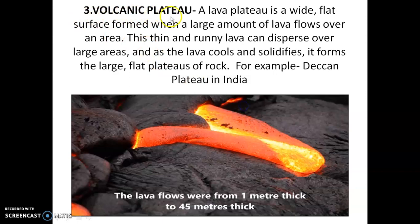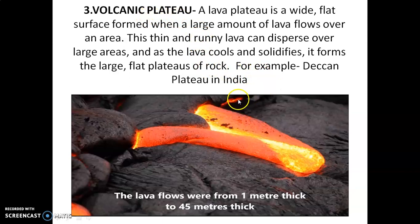Third: Volcanic Plateau. A volcano is when magma oozes out from the interior of the earth and when it spreads on the earth's surface, that magma is converted into lava. In the same way, when magma comes out from fissures — fissures means cracks — and spreads over a large area, then cools down and forms a plateau with a flat top and steep sides, a volcanic plateau is formed. For example, the Deccan Plateau in India.